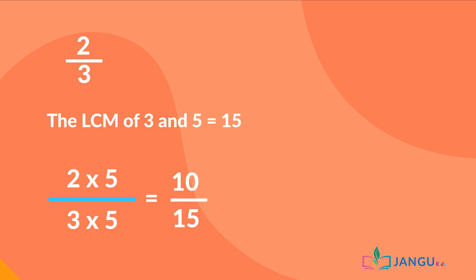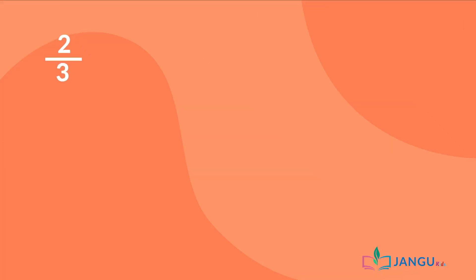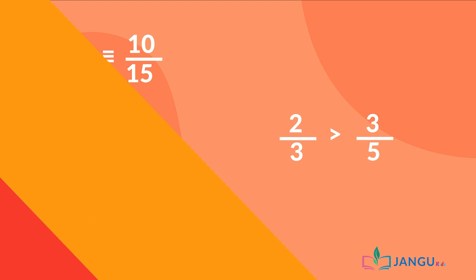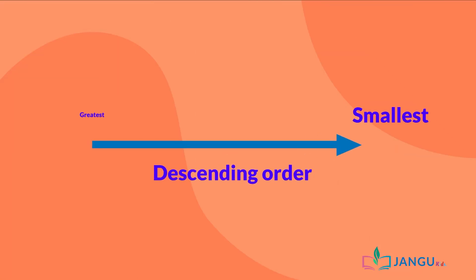From this, we can see that 2 over 3 is equivalent to 10 over 15, while 3 over 5 is equivalent to 9 over 15. Looking at the equivalent fractions, we can see that 2 over 3 is greater than 3 over 5. So, arranging in descending order, we have 2 over 3, then 3 over 5, which means 2 over 3 is greater than 3 over 5.